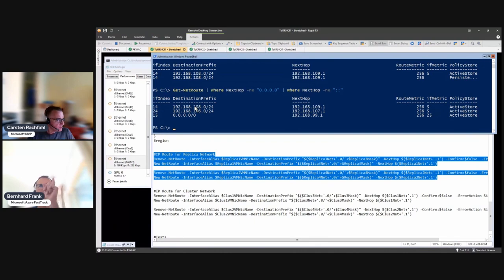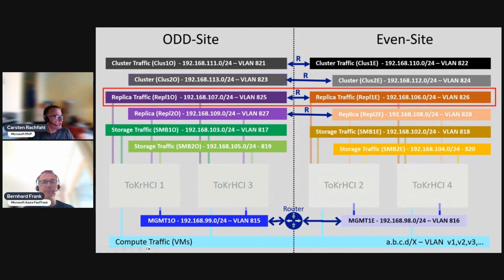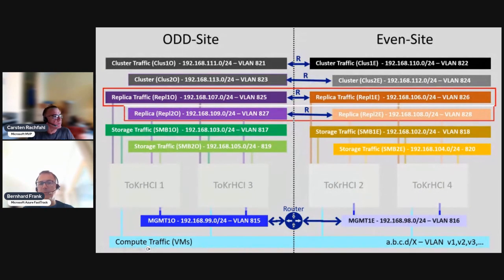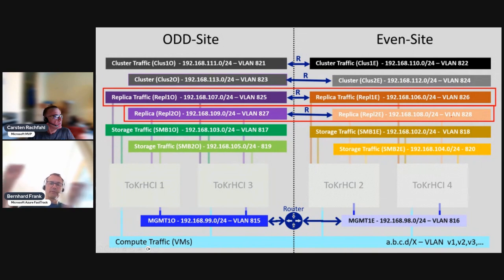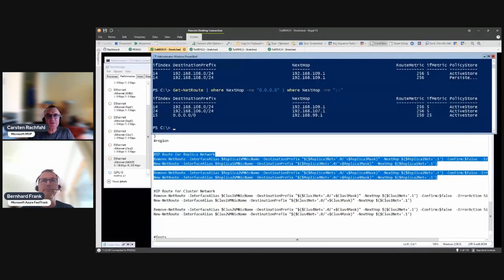Going back to the visualization: what we're trying to do is hook up the replica network odd to the replica network even on the other side — one-odd to one-even and two-odd to two-even. The routes need to switch depending on who the next hop is, and the .1 on each network is your router.